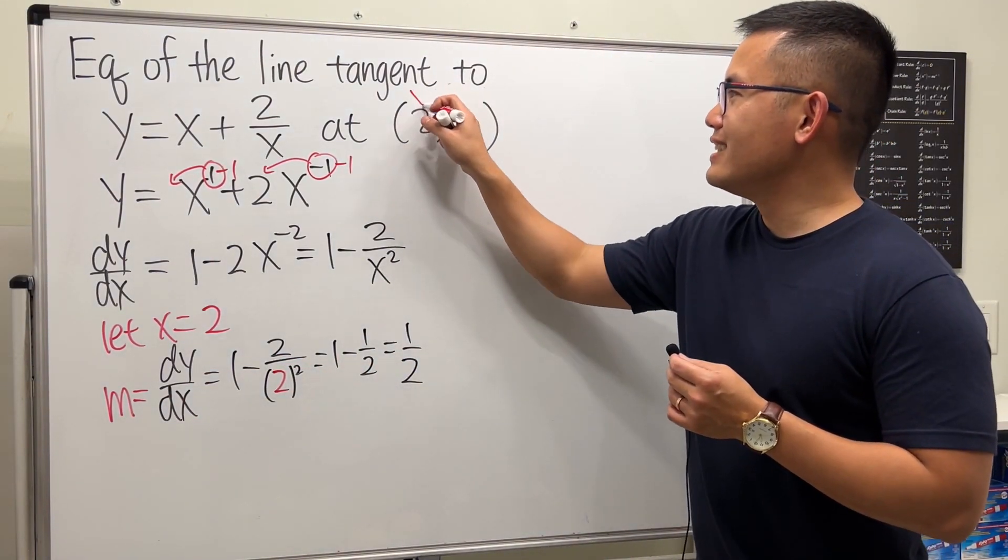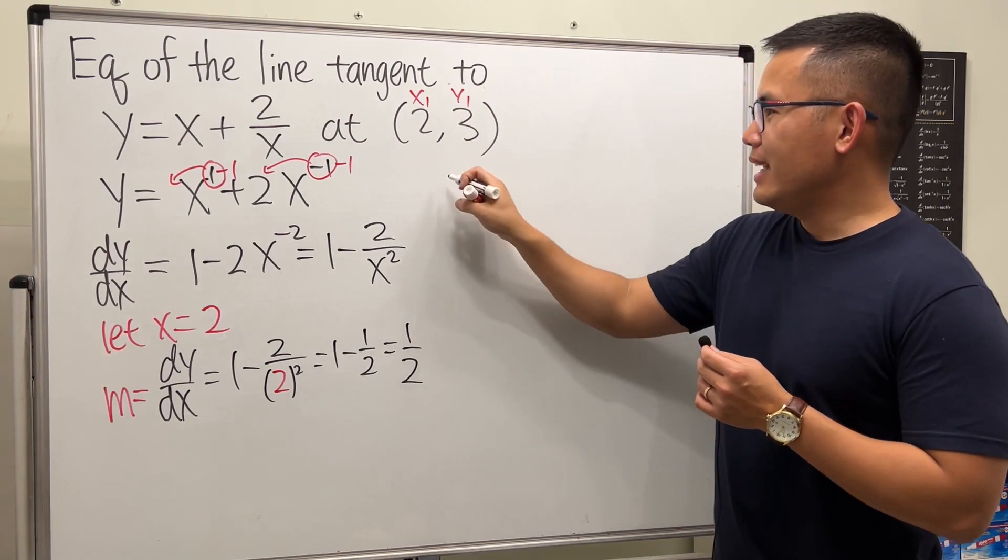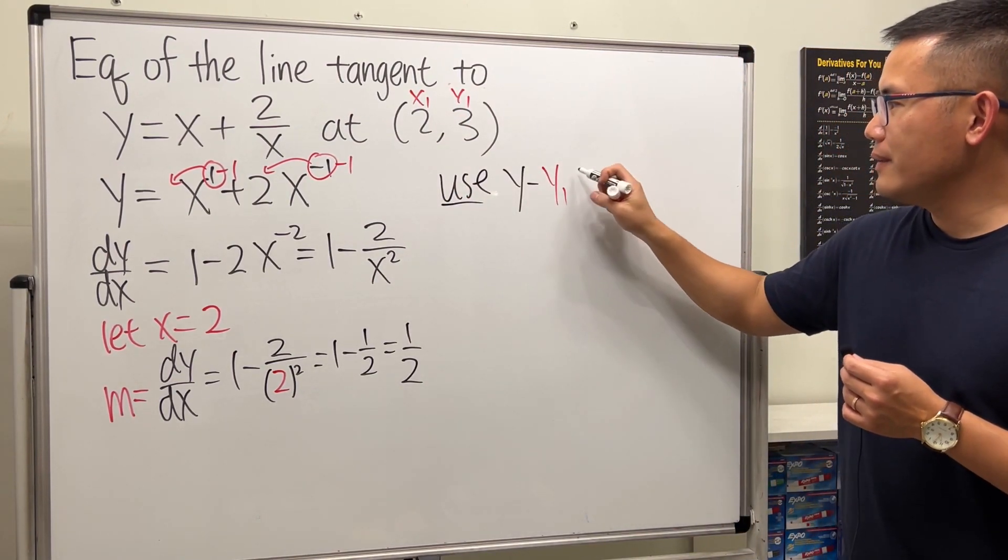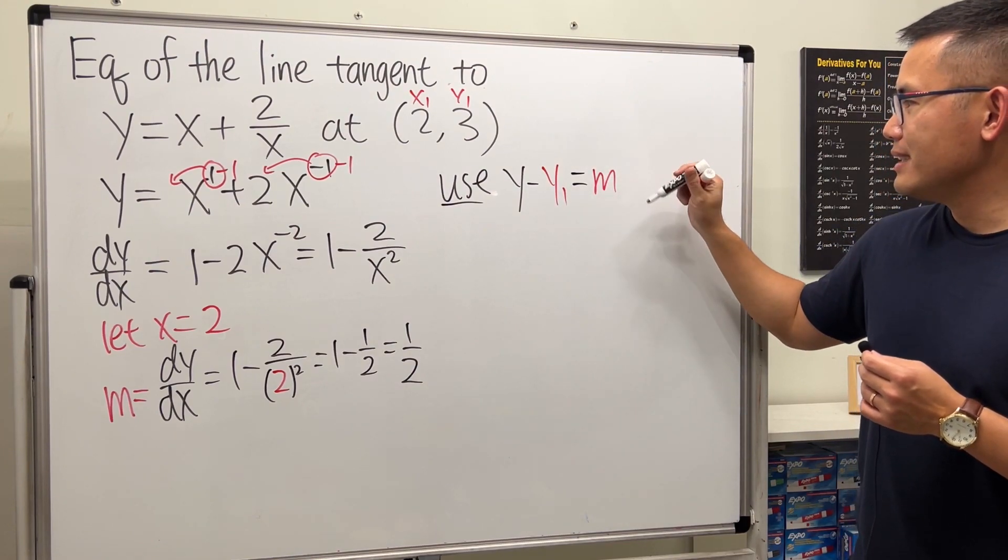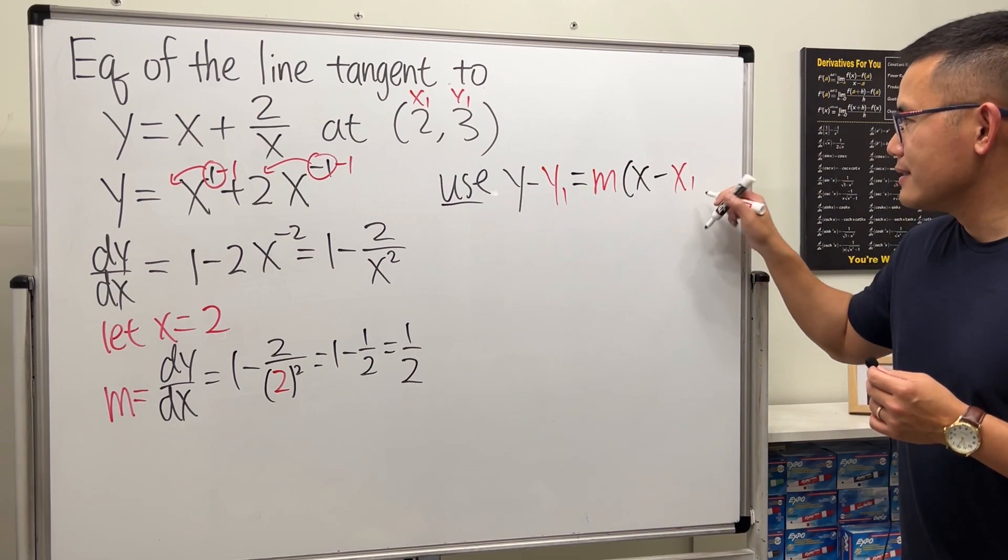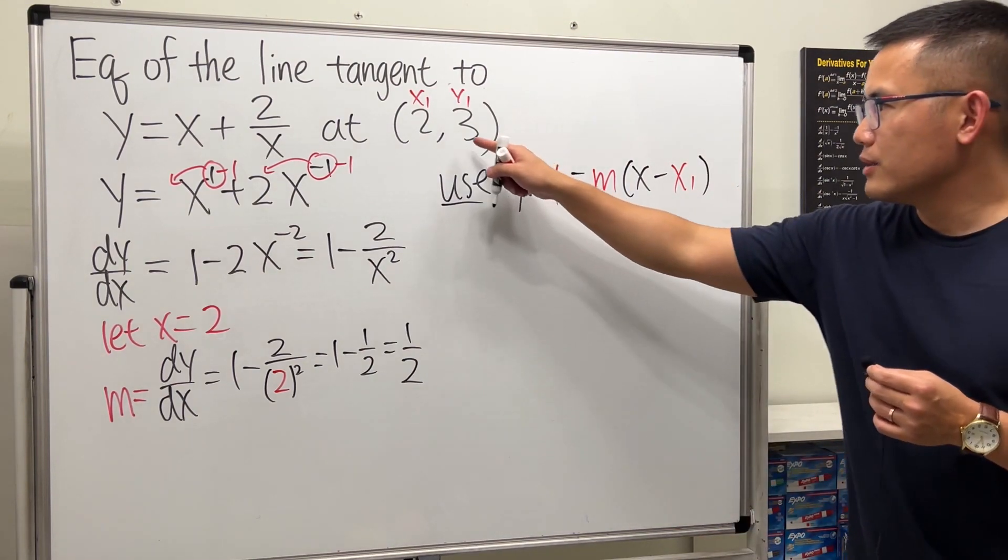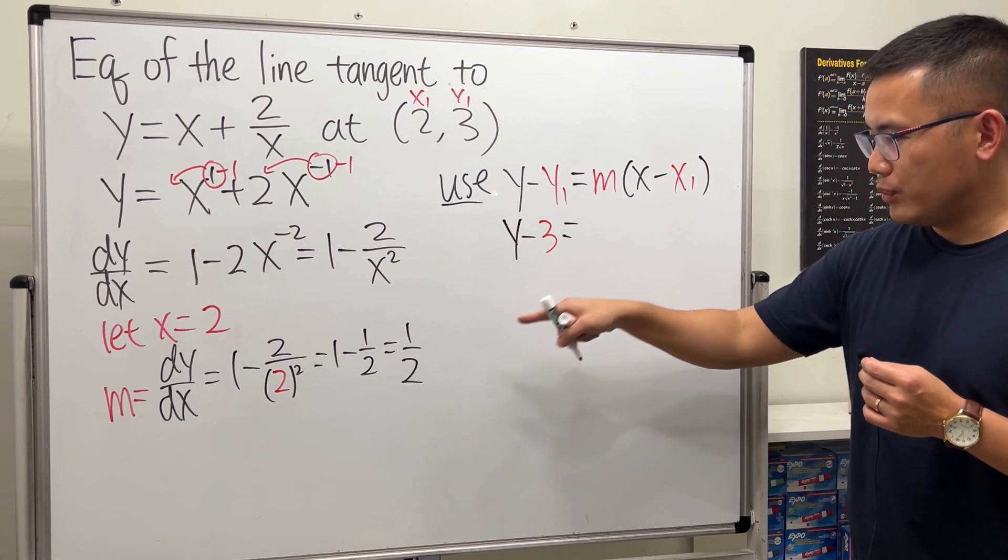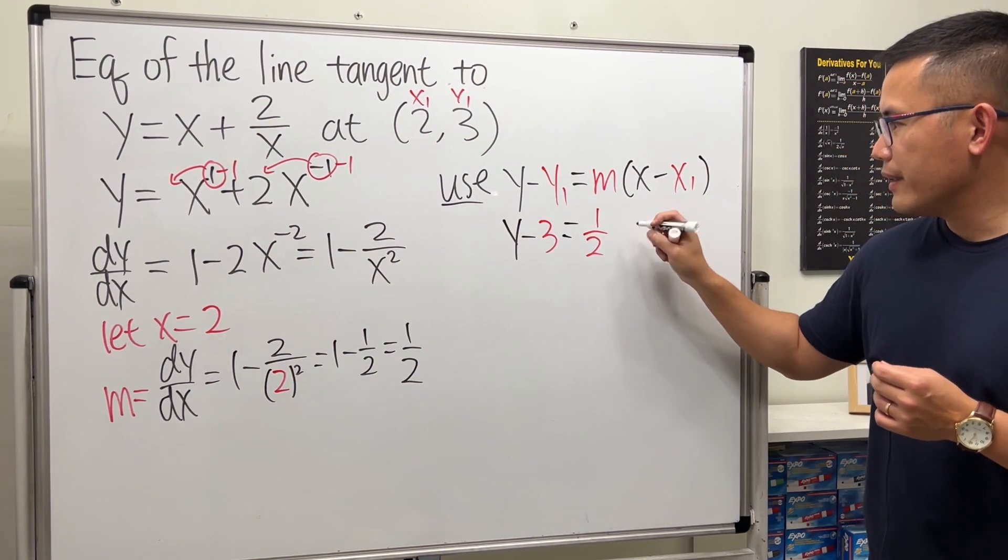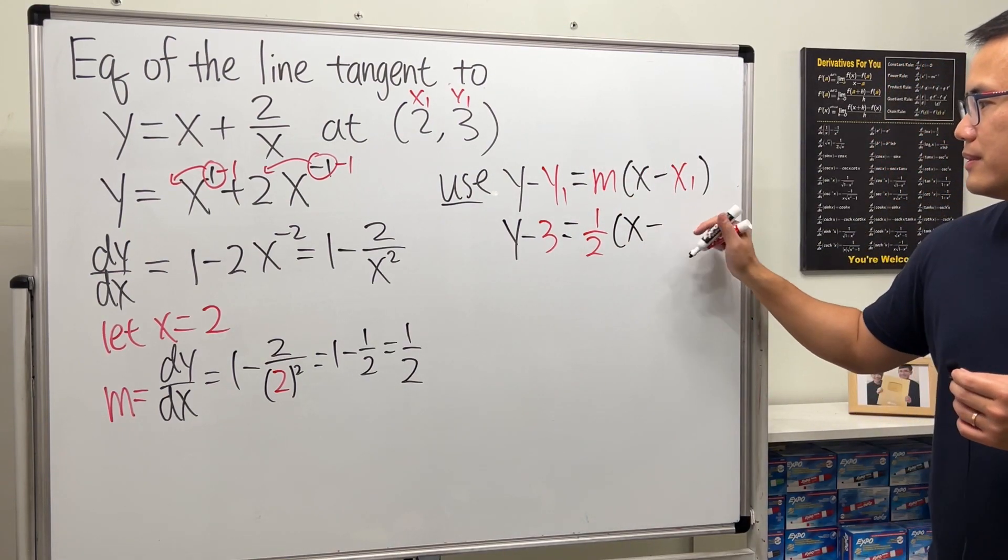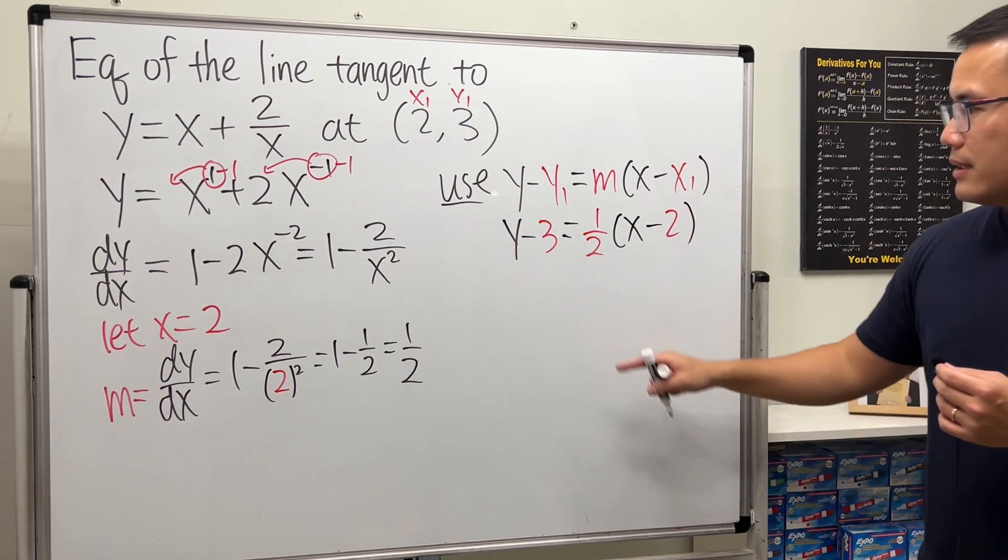We have the point (x₁, y₁) and you know the drill: y - y₁ = m(x - x₁). Plug in: 3 goes here, so y - 3 = m, which is 1/2, times x - x₁ is 2, so minus 2.